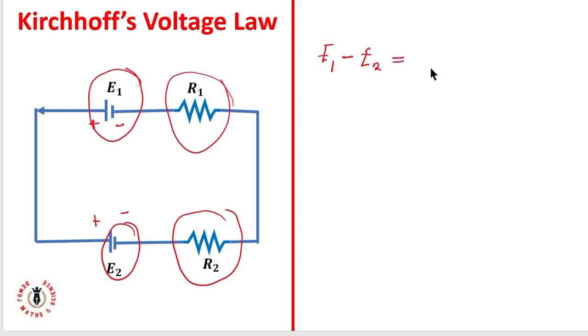The algebraic sum of this voltage will be given as E1 minus E2. This algebraic sum is the same thing as the total voltage drop across this loop, which will be I into R1 plus I into R2, because the resistors are in series so they have the same current. So E1 minus E2 equals I times (R1 plus R2).